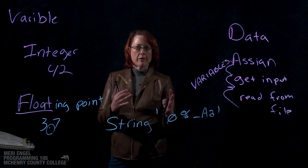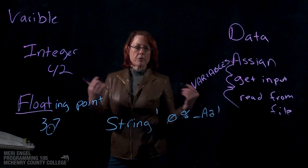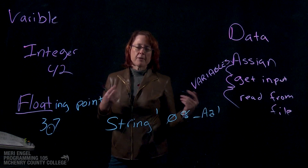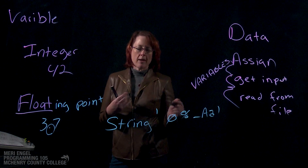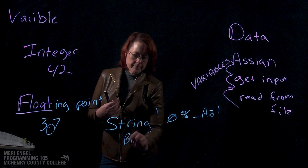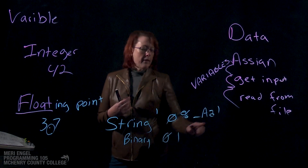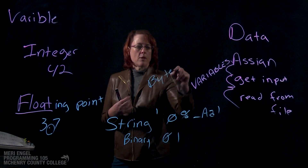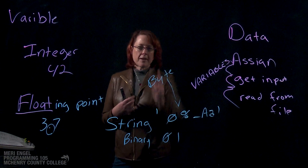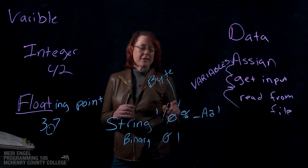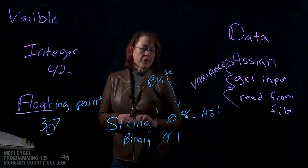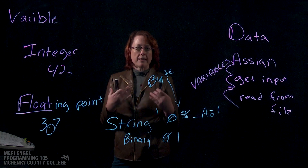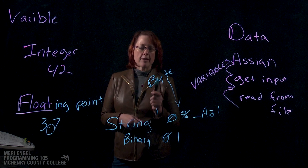Everything boils down underneath all of this to binary code. Binary code comes from the days when the first computers were larger than a classroom and processing was done using vacuum tubes, which had two states: off and on — referred to as binary, with values 0 and 1. For each character you need 8 bits, which becomes a byte, and one byte holds one character. And for your trivia game: 4 bytes is called a nibble. Also, when we fix a program by solving problems in it, that's called debugging — because the very first bug was a moth that landed on a vacuum tube and shorted it out.